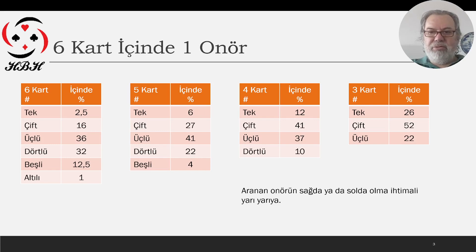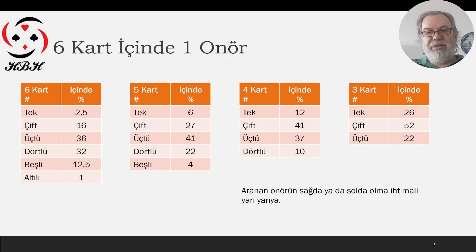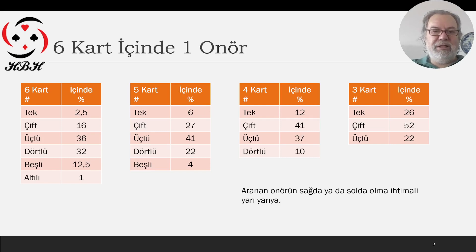Son olarak da üç kart durumuna bakalım. Tek parça yakalama ihtimalimiz yüzde yirmi altı. Çift olma ihtimali yüzde elli iki. Üçlü olma ihtimali de yüzde yirmi iki. Daha önce söylediğim gibi, bunların sağda ya da solda olması buradaki ihtimallerin yarısı kadar.